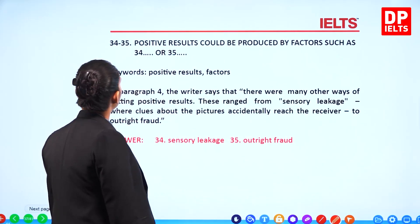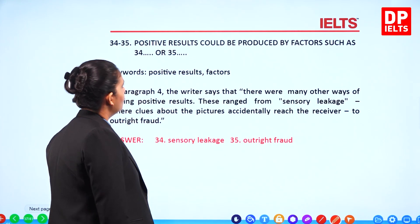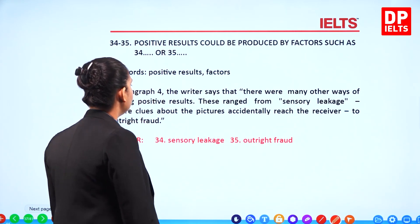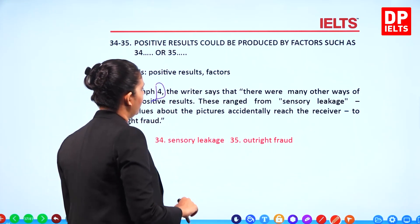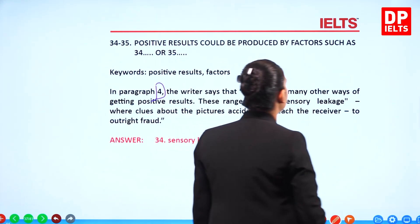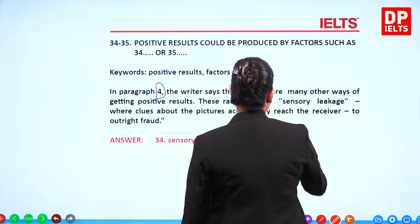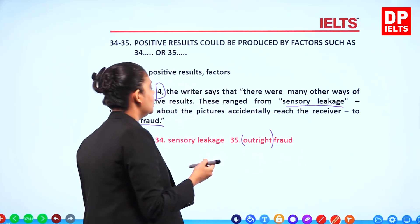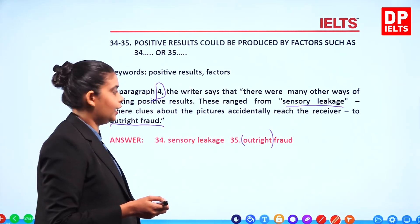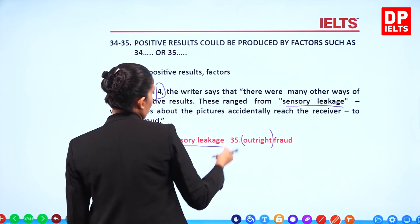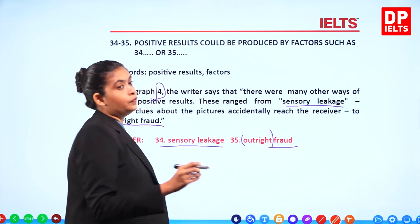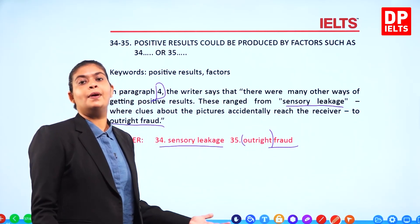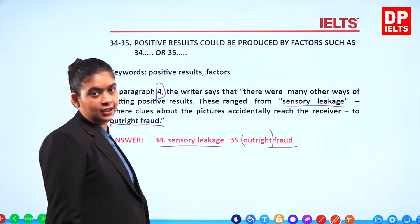Questions 34 and 35: 'Positive results could be produced by factors such as...' In paragraph 4, the writer says there were many other ways of getting positive results, from sensory leakage to outright fraud. So the two key answers are 'sensory leakage' and 'fraud'. 'Outright' is optional and can be included before 'fraud'. But fraud definitely needs to be there.